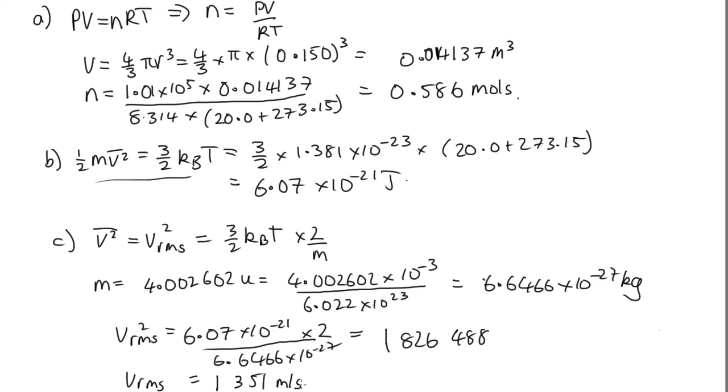So fairly fast. And because that's so fast, that's why so much helium has escaped the Earth's atmosphere. This helium, because it's so light, travels very quickly. And so it's more likely to exceed the escape velocity and escape from the Earth's atmosphere.